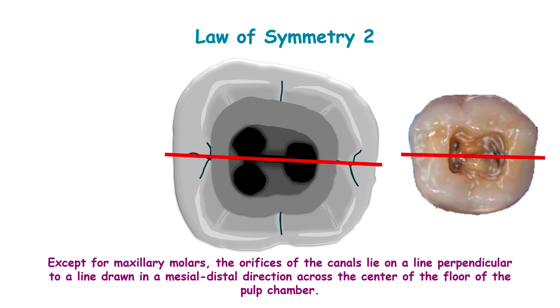Coming to law of symmetry 2: these are the canals which lie perpendicular to a line drawn in a mesiodistal direction across the center of the floor of the pulp chamber.